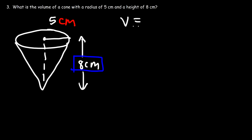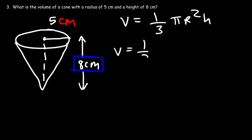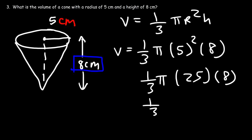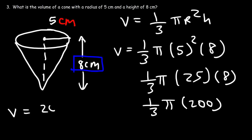The volume of a cone is one third of that of a cylinder, so it's one third pi r squared times the height. With radius 5 and height 8: 5 squared is 25, and 25 times 8 is 200 (like eight quarters making two dollars). So our answer is 200 pi over 3 cubic centimeters — the units for volume are always cubic units.